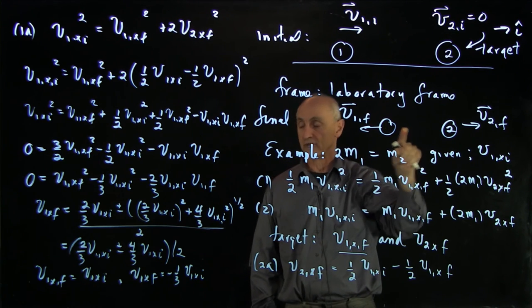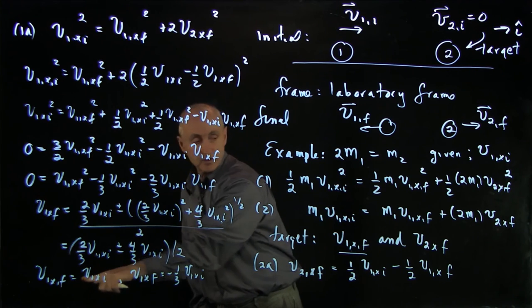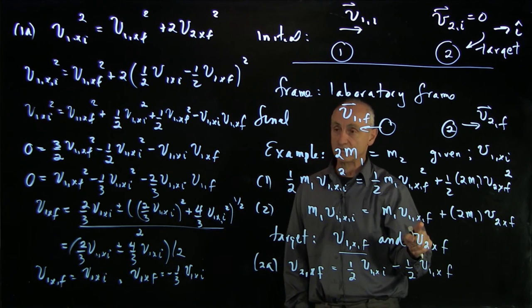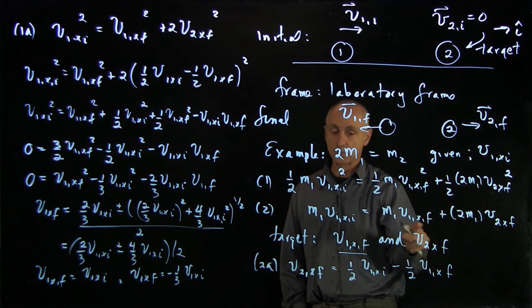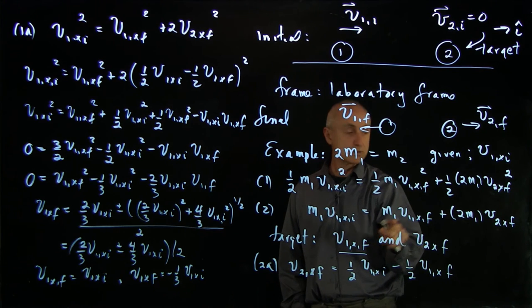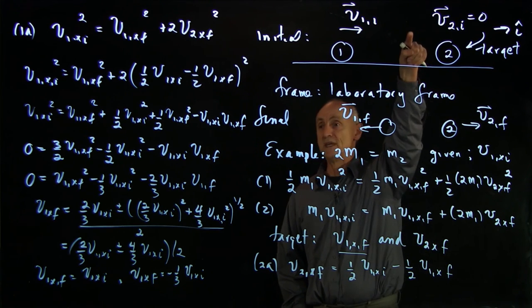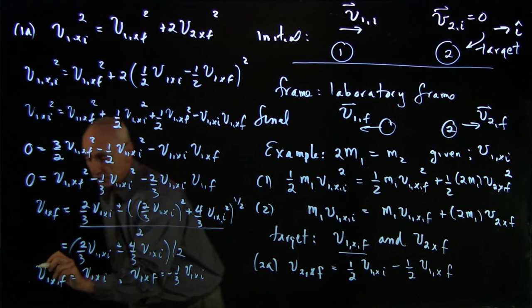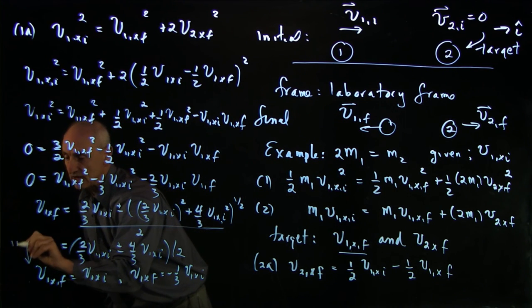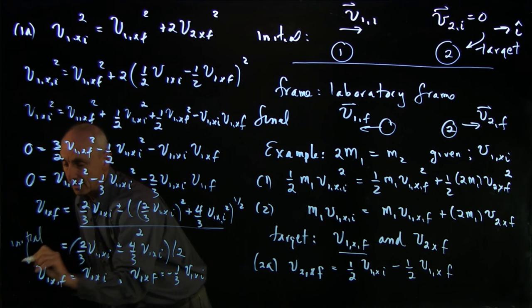and the other solution will define the final state. You can check for yourself that if you just put v1x final into this, equal to v1x initial, into this momentum equation, then v2x final is 0, which just repeats the initial conditions. So this solution is the initial state.